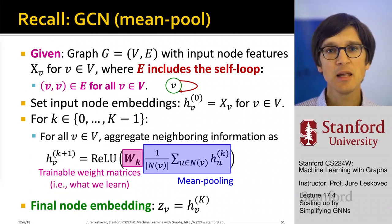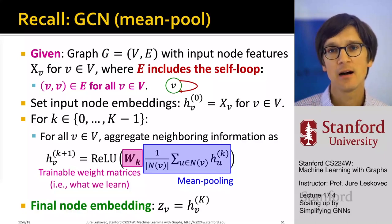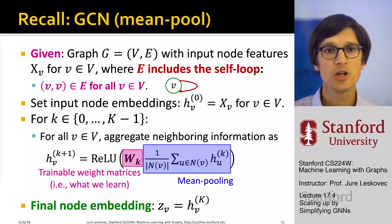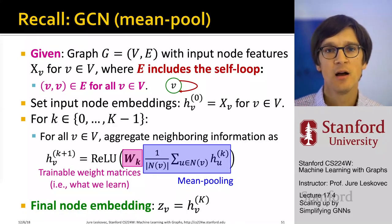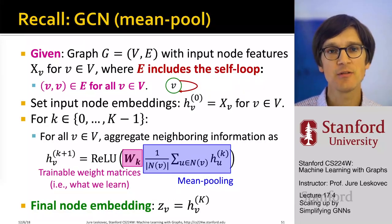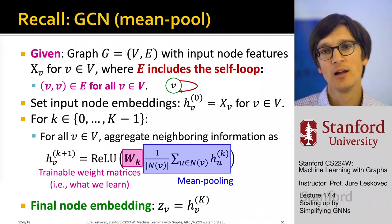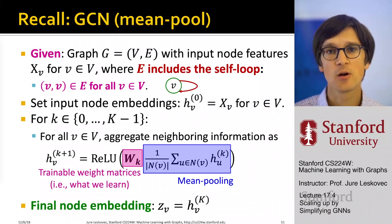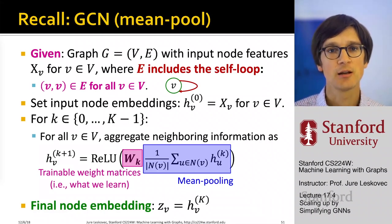Let me introduce the GCN and then we'll continue from there. GCN takes in a graph with node features. Let's assume that every node includes a self-loop — this will be convenient for mathematical notation later. Let's think of this as a full batch implementation. We basically set the node embeddings at layer 0 to be simply node features, and then we are going to iterate for k layers, where every node at layer k+1 is going to take the embeddings of its neighbors from the previous layer, sum them up.